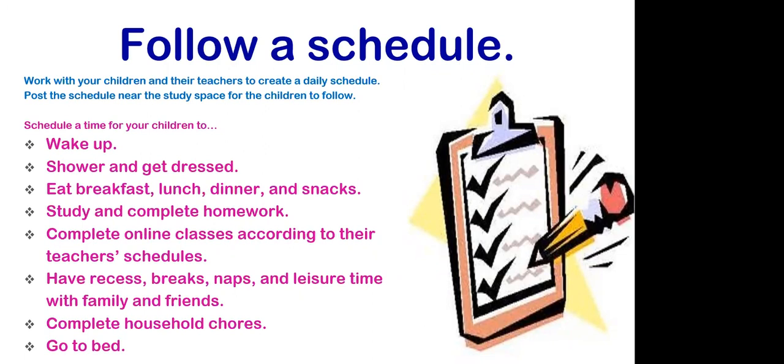Look at the teacher's schedule — when is he or she teaching that class online? Block those times into your child's schedule accordingly. For example, English class from 8 o'clock to 8:50, aligned with what the teacher is doing at that time. You can easily contact the teacher, secretary, or principal to ask about those times. Next, implement recess, breaks, naps, and leisure time into your schedule.